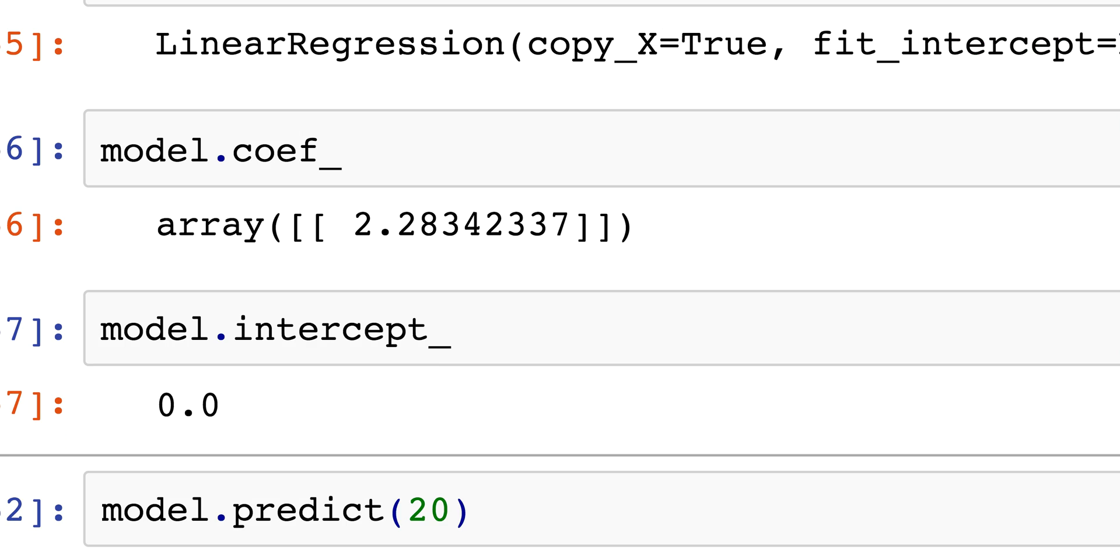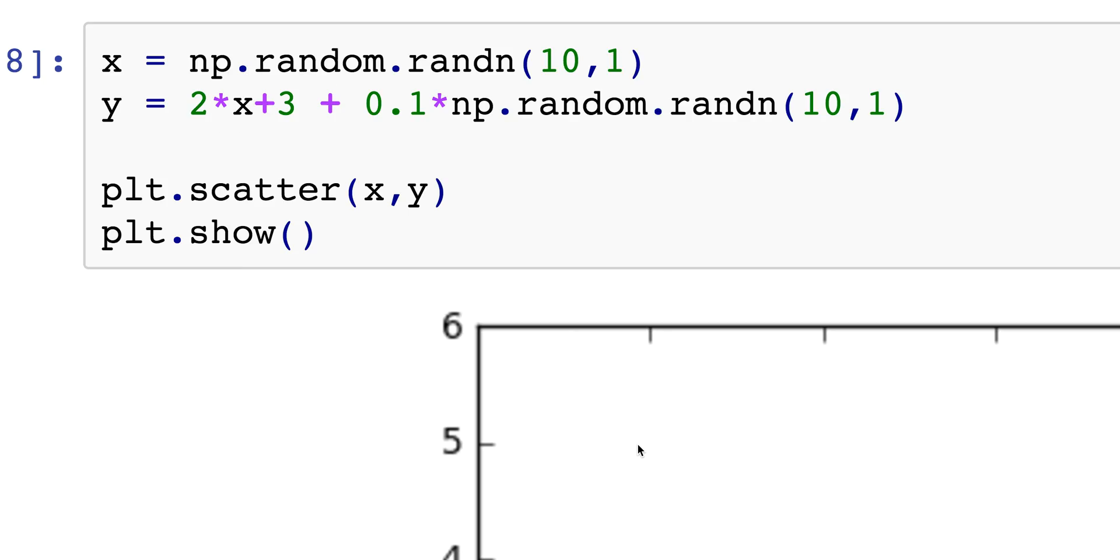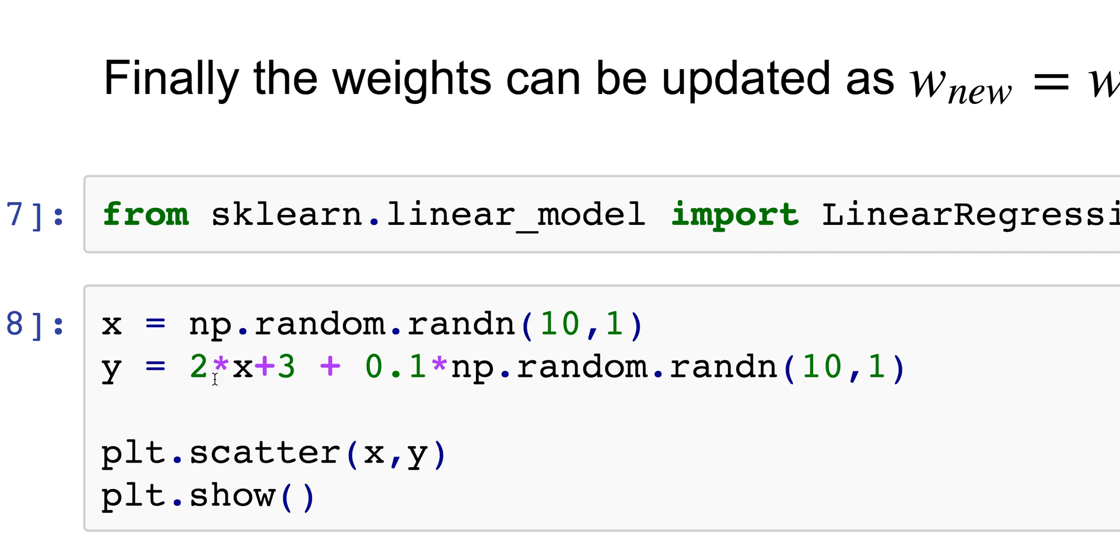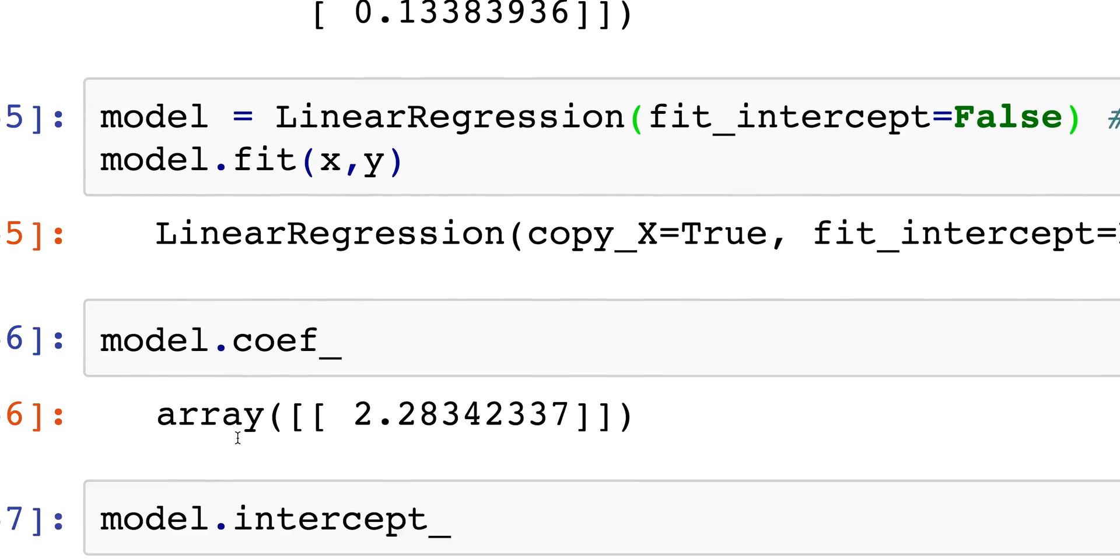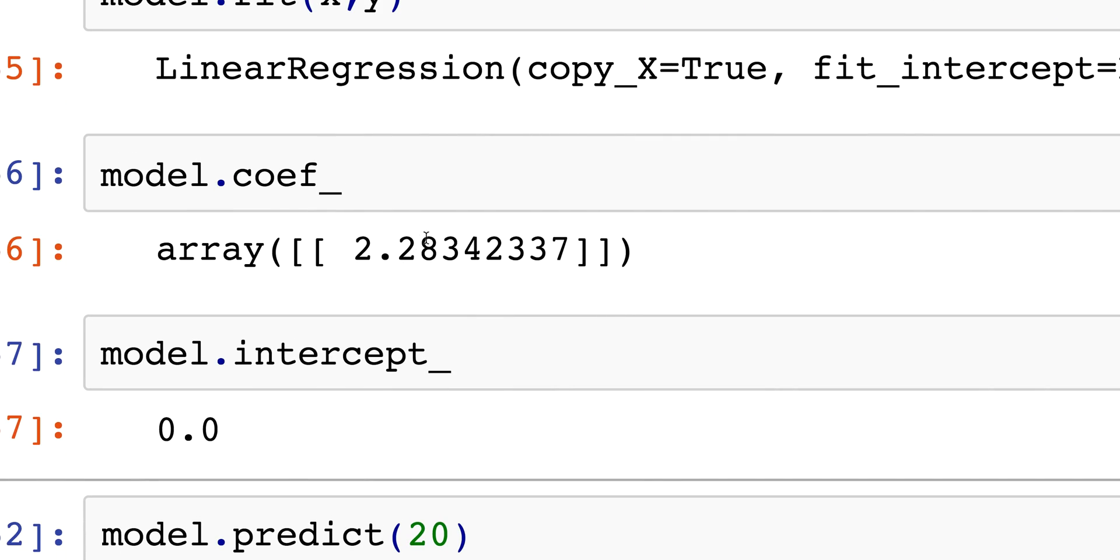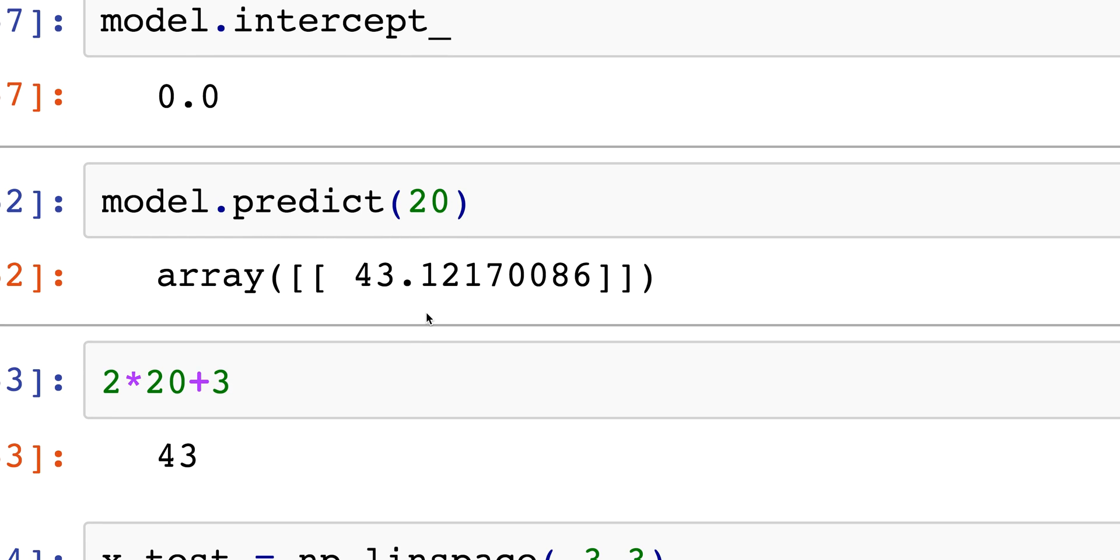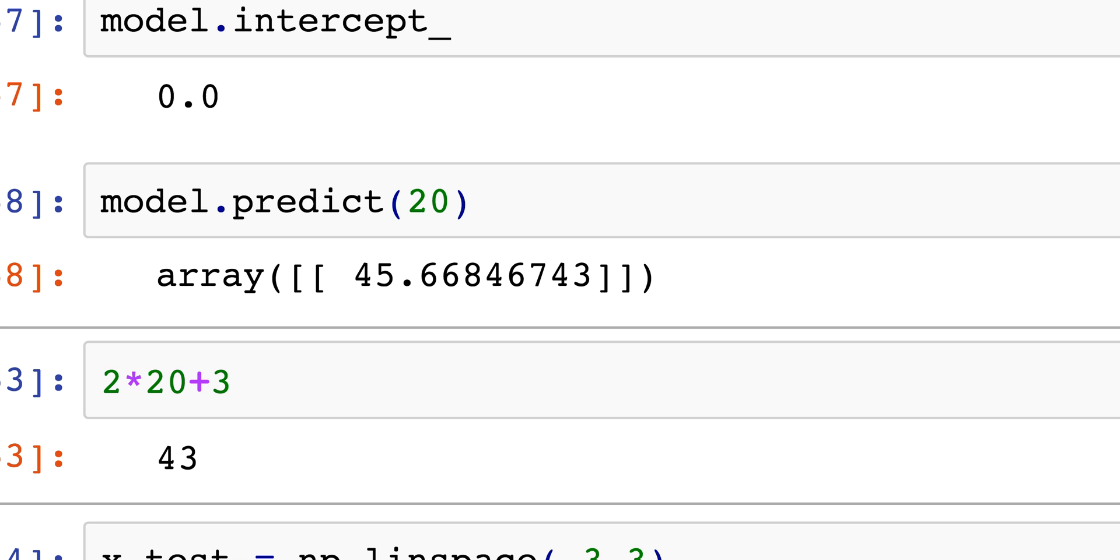If you look at the intercept it's going to be zero. My true coefficient is 2 right, so 2.28 is quite a bit off. Like I would have accepted 2.05 for example to say okay it's not that bad. If I was to predict this time I would get 45, it's not quite near 43 that we wanted.